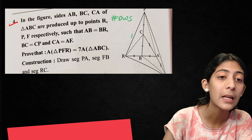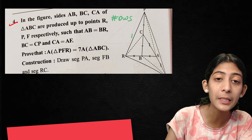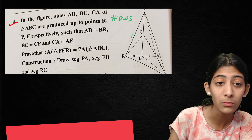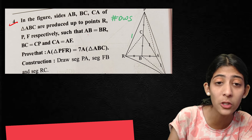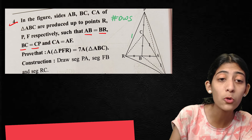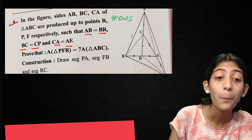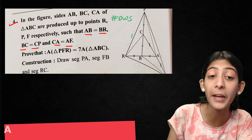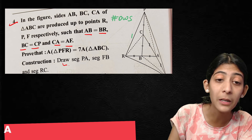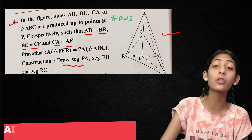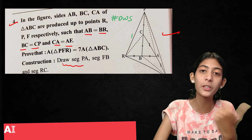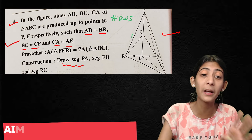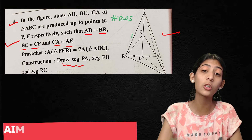Fourth question: In the figure, sides AB, BC, and CA of triangle ABC are produced up to points R, P, and F respectively, such that AB = BR, BC = CF, and CA = AF. Prove that the area of triangle PFR is equal to seven times the area of triangle ABC. You can also use construction here. These are challenging questions worth 4 marks each — note the figure.